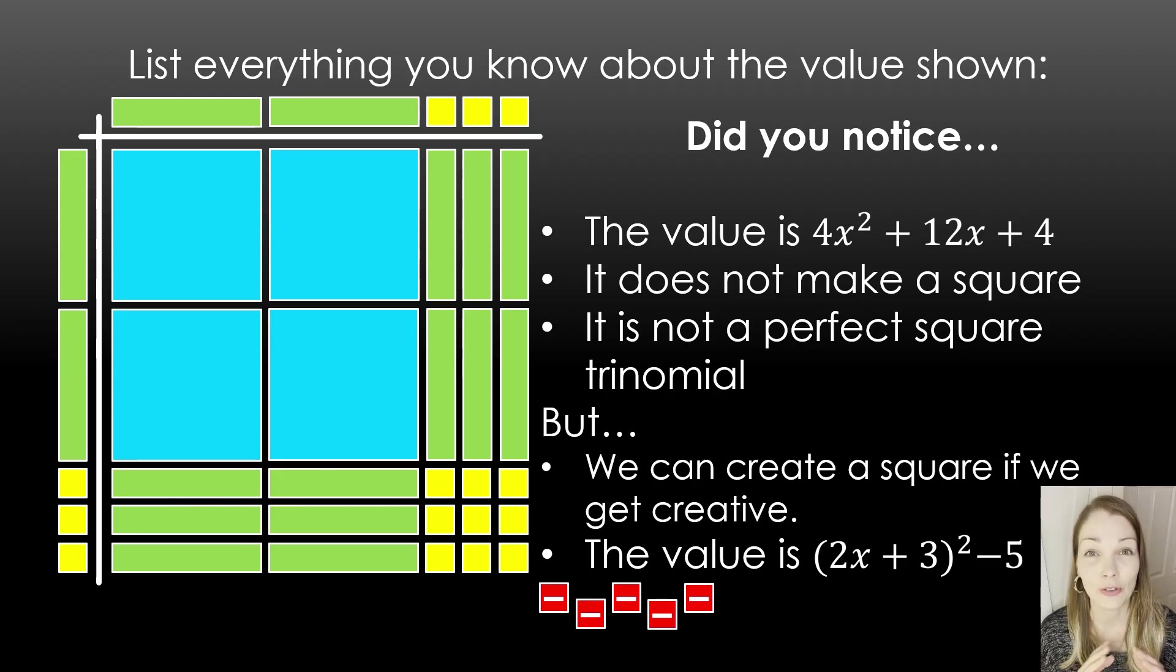What do I need to complete a square? And in this case, I needed 5 more units. So in order to keep the value I actually wanted, I also have to think about 5 negative units. And here you can see I rewrote the expression as 2x plus 3 squared minus 5. And this visual is showing where I got that.